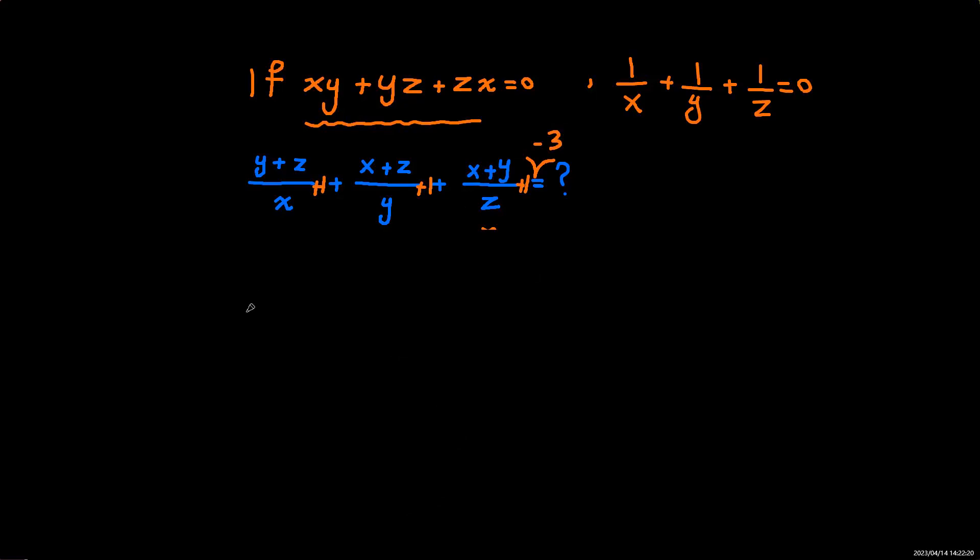So when we do this, again, we'll have 3 fractions, and then this minus 3. So it will be x, y, z. And all of this, the numerators for all of them will be x plus y plus z.